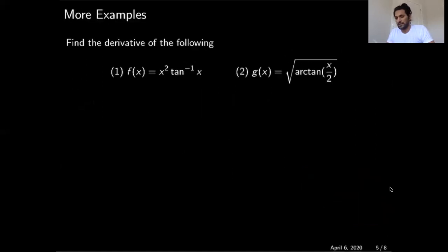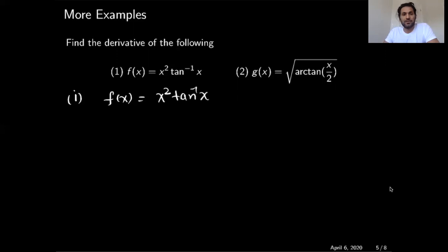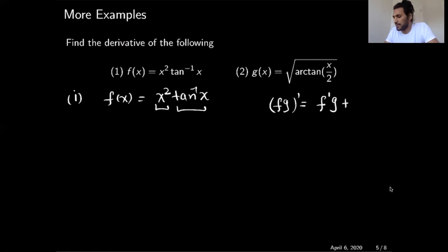I have two more examples. In the last two examples we used the chain rule and the derivative of inverse trigonometric functions. Here in the first example we will use the product rule, and in the second example we will use the double chain rule. In the first example, the function f of x equals x squared times tangent inverse x. Since this is the product of two functions, we will use the product rule: the derivative of f times g is the derivative of the first function times the second as-is, plus the first function times the derivative of the second function.